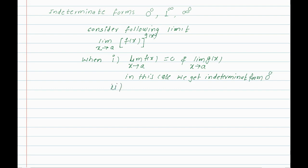Second case: if the limit of f(x) as x tends to a is 1, and the limit of g(x) as x tends to a is infinity, then we get the indeterminate form 1 to the power infinity.